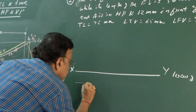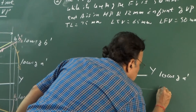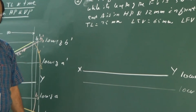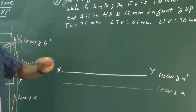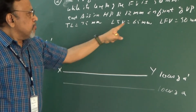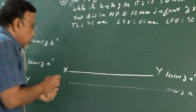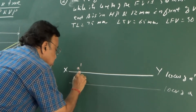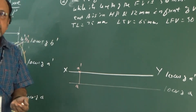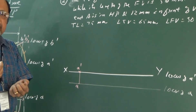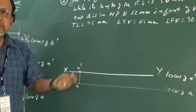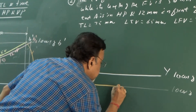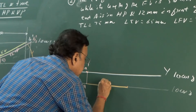I will indicate the locus of A as well. Now, let us start with LTV. The length of the top view is given as 65. First, I need to locate point A — A dash and A. LTV is given as 65, so let me mark this on the line. This is my LTV.